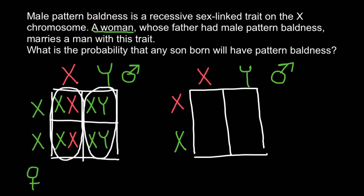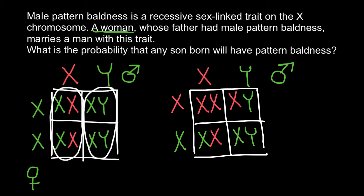Once again, when we build the Punnett square, we can predict all the genotypes and phenotypes in their progeny. Here we have two defective X chromosomes, one normal X from the mother and defective X from the father, defective X from the mother with normal Y, and normal X from the mother with normal Y. 50% of the progeny would be males.